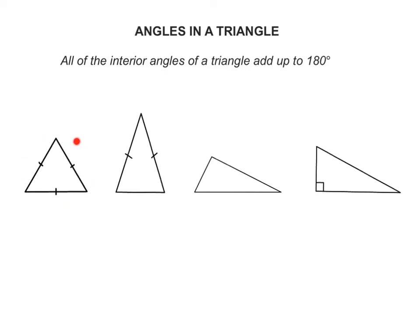Here we have some triangles: an equilateral triangle where all sides are of equal length, and this is denoted by the lines here; an isosceles triangle where two sides have equal length; a scalene triangle where all the sides have different lengths; and a right-angled triangle.